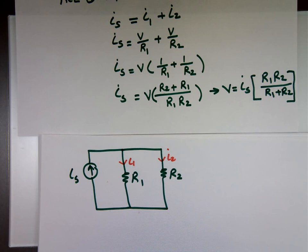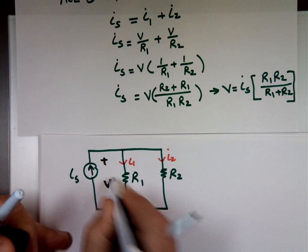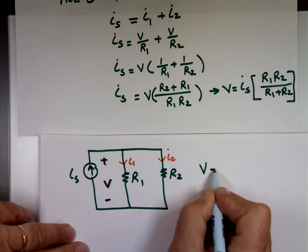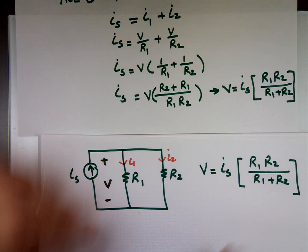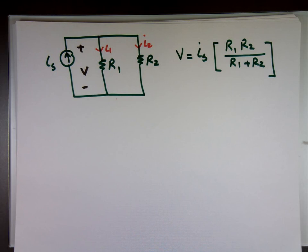So the voltage here is V. So now, we know what V is. We just finished finding V. V equals what? I sub S times R1, R2 over R1 plus R sub 2. Now I can get rid of that page.